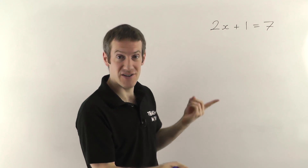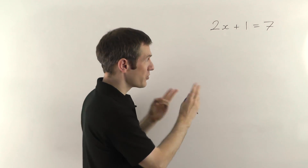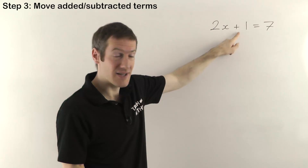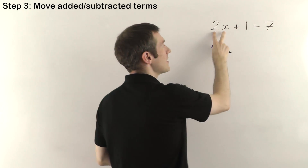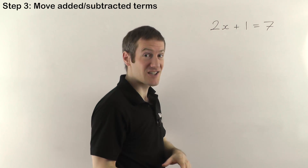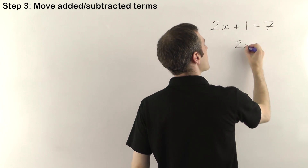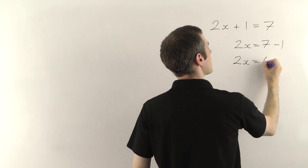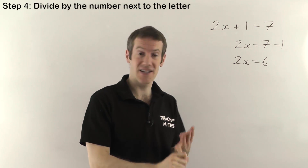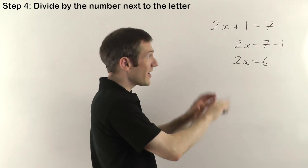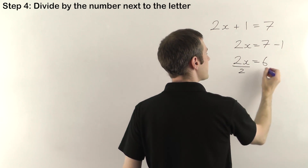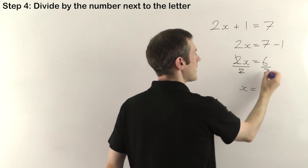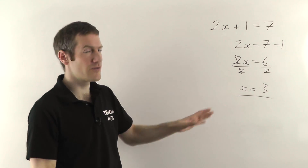Step one — remove fractions — there are none, so we skip it. Step two — remove brackets — no brackets. Step three: move added and subtracted terms. We do have a plus 1, so we leave the 2x where it is and move the plus 1 over. Change sides, change signs — the plus 1 becomes a minus 1 — giving us 2x equals 7 minus 1, which is 6. The last step: divide everything by 2 on both sides. Those 2s cancel, leaving x by itself, and 6 divided by 2 is 3.